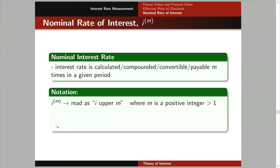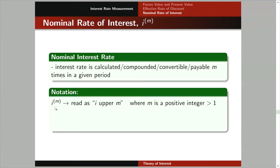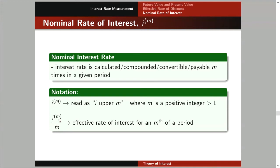And this is our notation. This one is read as I upper M, where M is a positive integer greater than 1. So this is the notation for the nominal interest rate. And to find the effective rate of interest for an M-th of a period, you have to divide this notation by M — you have I upper M over M — and that will be your effective rate of interest for an M-th of a period.